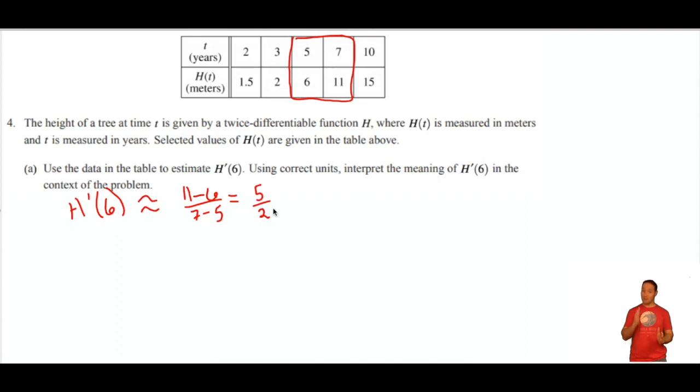Now, if they ask for units, you've got to put units. So the units here are meters per year. I divided 11 minus 6 meters over 7 minus 5 meters. So meters per year.